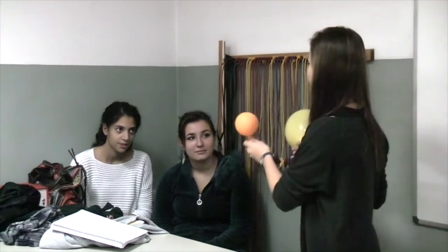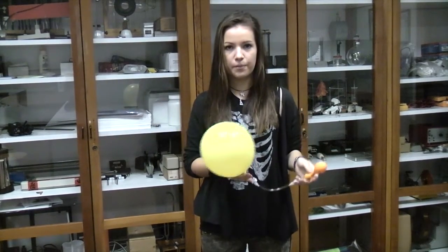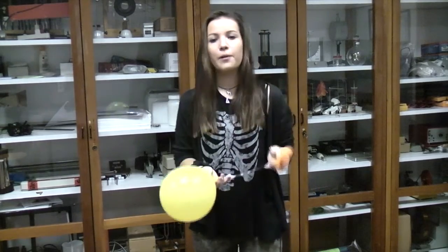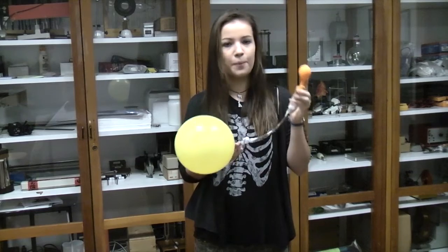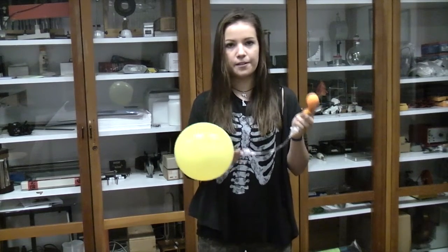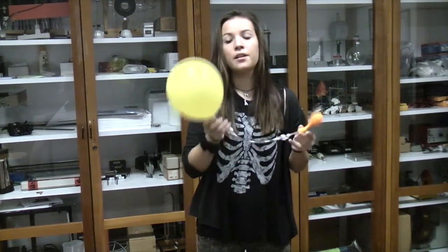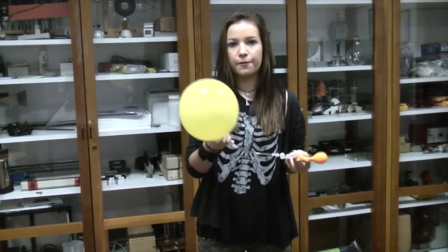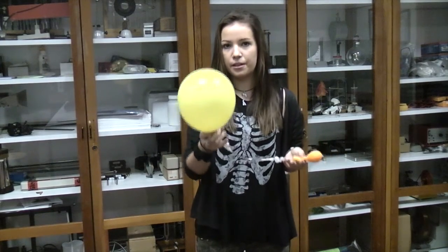As you can see, the orange one is becoming smaller. In fact, we know that air passes from a higher pressure zone to a lower pressure zone. The air passes from the orange balloon, where the surface is smaller so the pressure is bigger, to the yellow balloon, where the surface is bigger so the pressure is smaller.